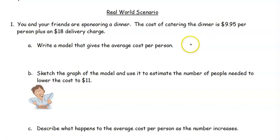So we know that the total cost is going to be $9.95 per person plus the $18 delivery charge. But that's the total cost, that's not the average cost. To find the average cost, we have to divide by how many people are going to be. That's what's going to divide that $18 per person.